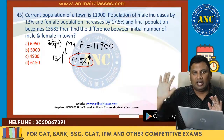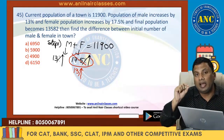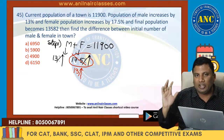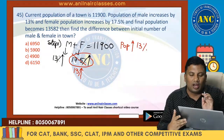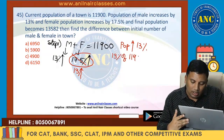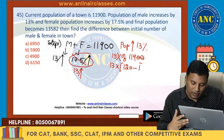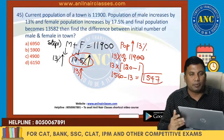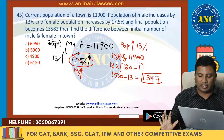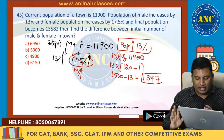First, forget about the 17.5% — park it for some time. If female also increases by 13%, and male increases by 13%, then population also increases by 13%. So 13% of 11,900: cancel two zeros, giving 13 × 119 = 13 × (120 − 1) = 1560 − 13 = 1547. If male increases by 13% and female also increases by 13%, population increases by 13%, so the actual increase in population is 1,547.